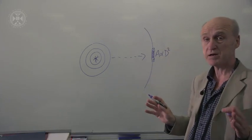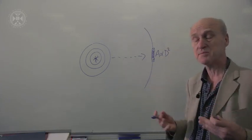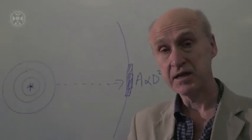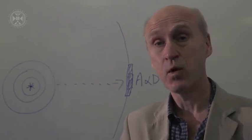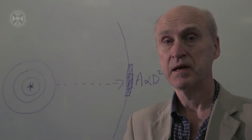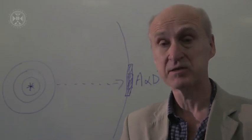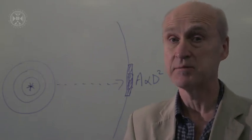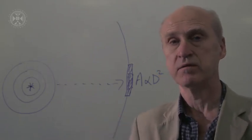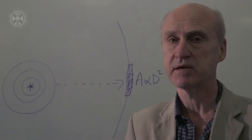A mirror that's twice as large will catch four times as much light. Engineers tell us that to make a telescope with twice as big a mirror diameter, in order to pay for the bigger telescope, the bigger building, all the supporting infrastructure, it costs about eight times as much. It goes as the cube of the diameter. So big telescopes are very expensive.